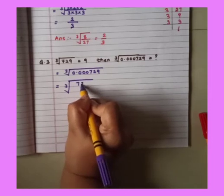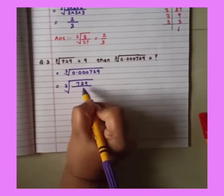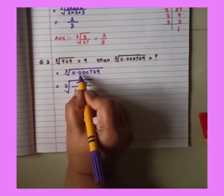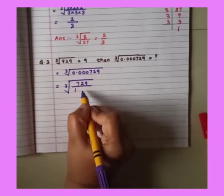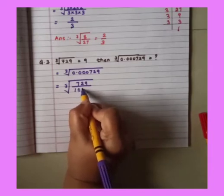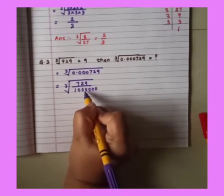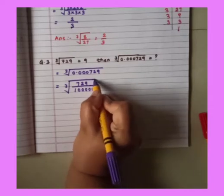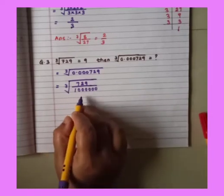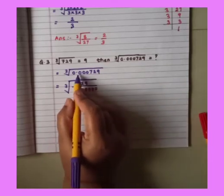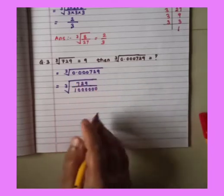So, 729 upon 1. See here the decimal point is after 6 digits. So after 1 how many zeros will come? 6 zeros. Okay students. Now, cube root of 729 upon 1 after that 6 zeros. Why 6 zeros? Because the decimal point is after 6 digits.